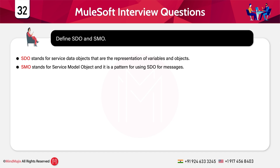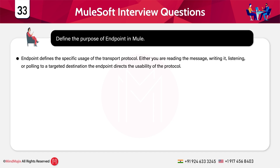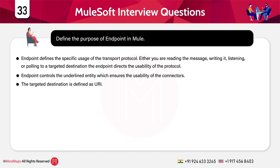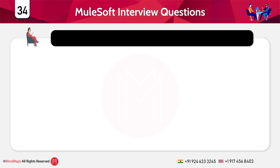Define the purpose of endpoint in Mule. Endpoint defines the specific usage of the transport protocol. Whether you are reading the message, writing it, listening, or polling to a targeted destination, the endpoint directs the usability of the protocol. The endpoint controls the underlying entity, ensuring the usability of the connectors. The targeted destination is defined as a URI — it depends on the connector whether the destination will be treated as a URI, URL, JMS, or the destination itself.